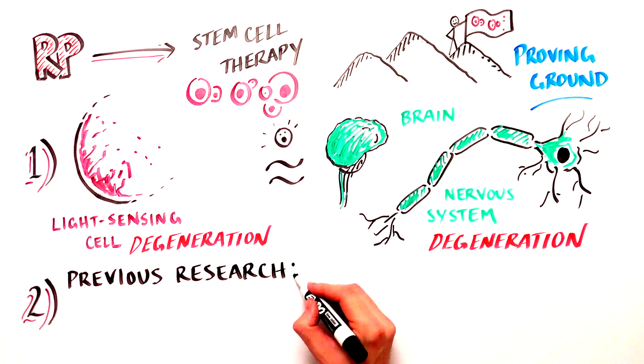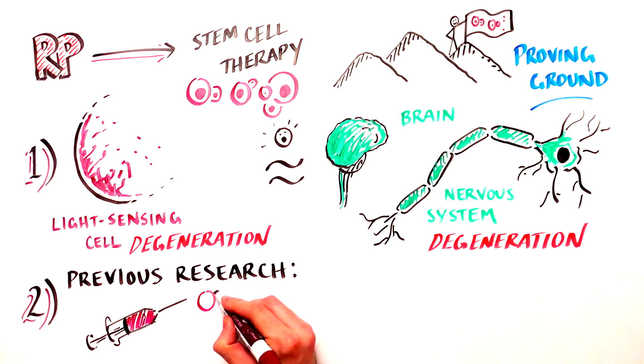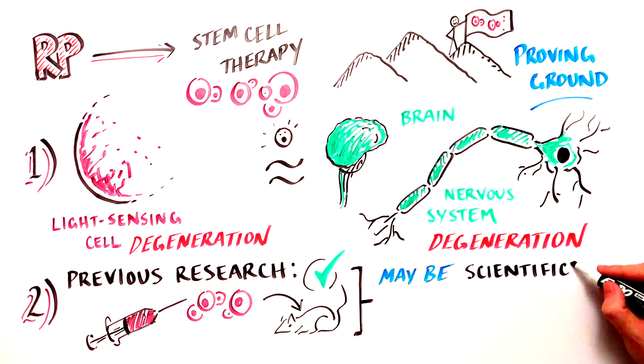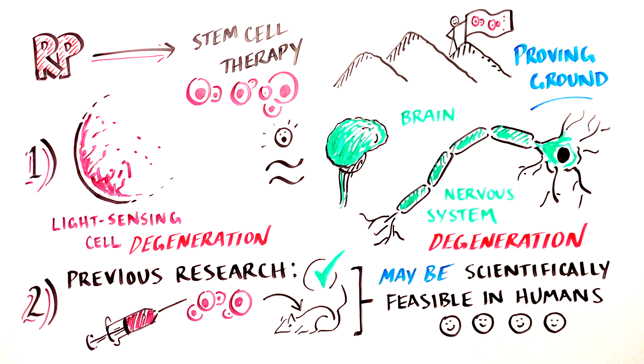Second, previous research has already demonstrated transplantation techniques in animals, thus the scientific feasibility of treating RP in this way has already been established in principle.